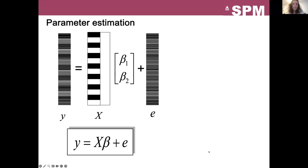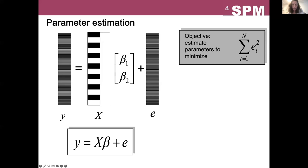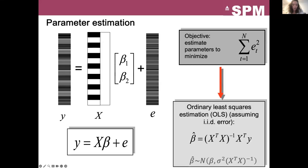How do we estimate the parameters? Here is our model corresponding to our study, so only two regressors in the design matrix. Our objective is to minimize the error term so that most of the variance of the series Y is explained by the regressors and not the error term. So the solution of this problem is the famous expression of the ordinary least square estimator. Let's try to explain it from a geometrical point of view.